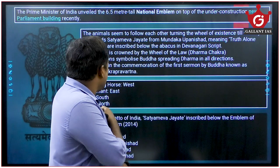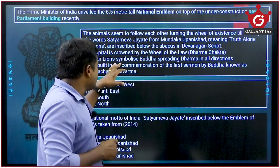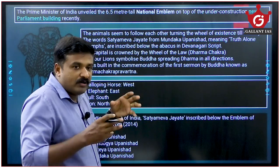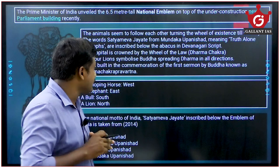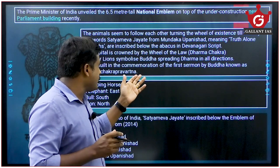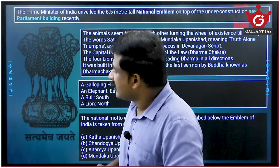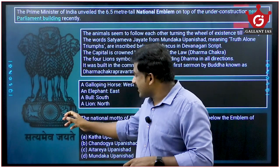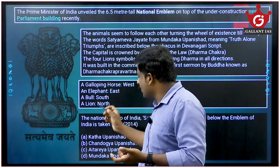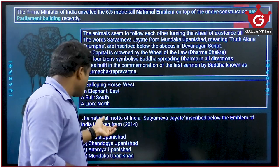'Satyameva Jayate' is written in Devanagari script. The capital is crowned by the Wheel of Law — a 24-spoked Dharma Chakra. The four lions symbolize Buddha spreading Dhamma in all four directions. It was built to commemorate Buddha's first sermon, known as Dharmachakra Pravartana, delivered at the deer park in Sarnath. On the abacus: a galloping horse faces west, an elephant faces east, a bull faces south, and a lion faces north.